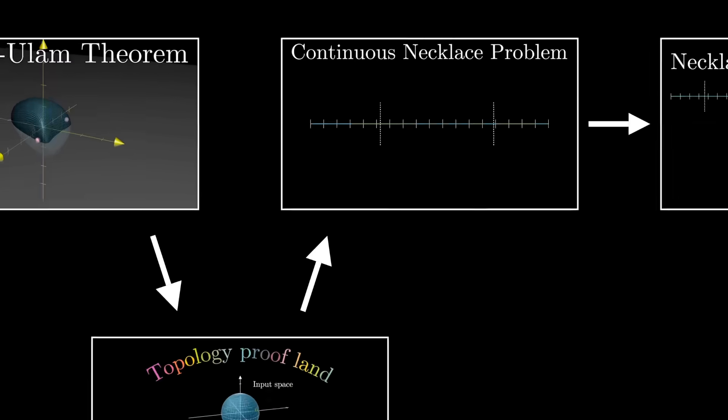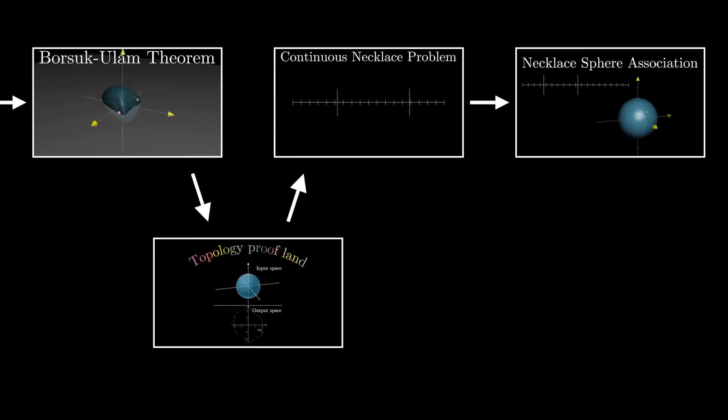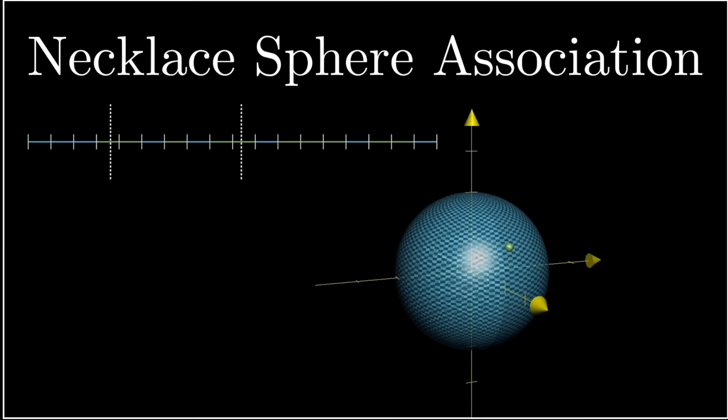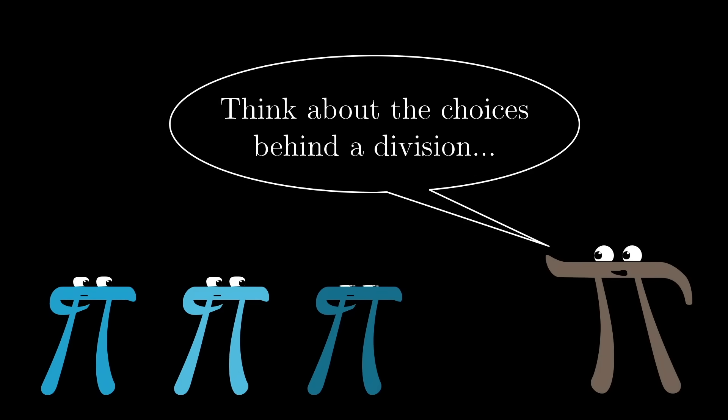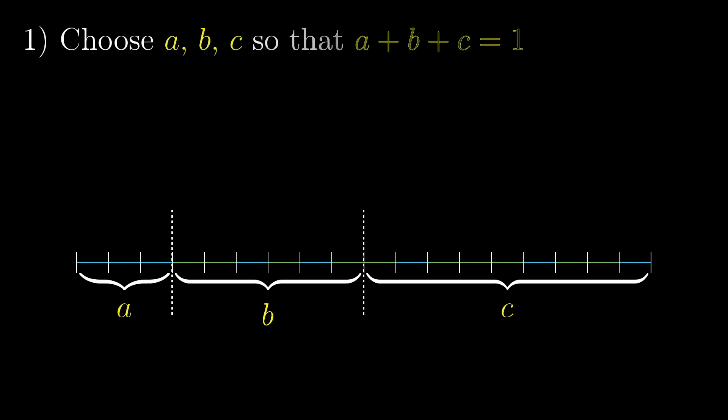Now, why are we doing all this? Well, in the continuous case, where you can cut wherever you want on this line, think about all of the choices going into dividing the necklace and allocating the pieces. First, you choose two locations to cut the interval.